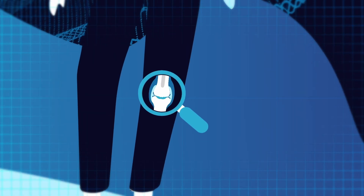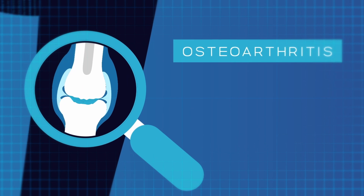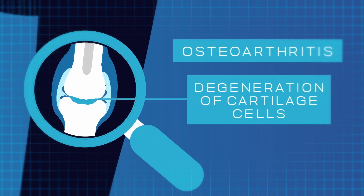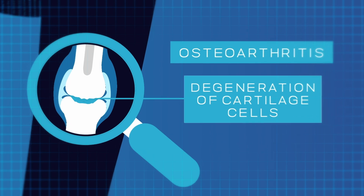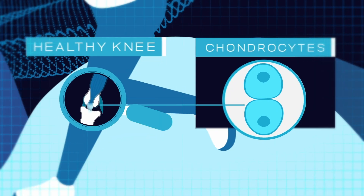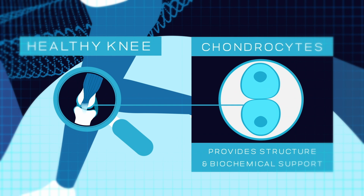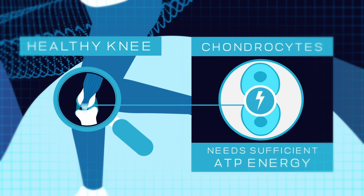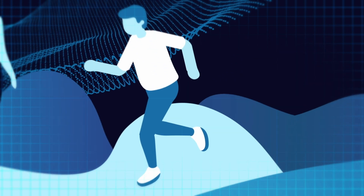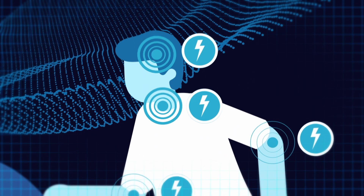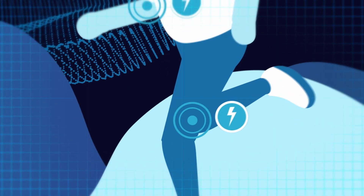Let's take a look at a knee affected by osteoarthritis. Osteoarthritis is the degeneration of cartilage cells within a joint. The chondrocytes, which provide structure and biochemical support for the cell, need sufficient ATP energy to fulfill their tasks. ATP is the fuel of body cells.